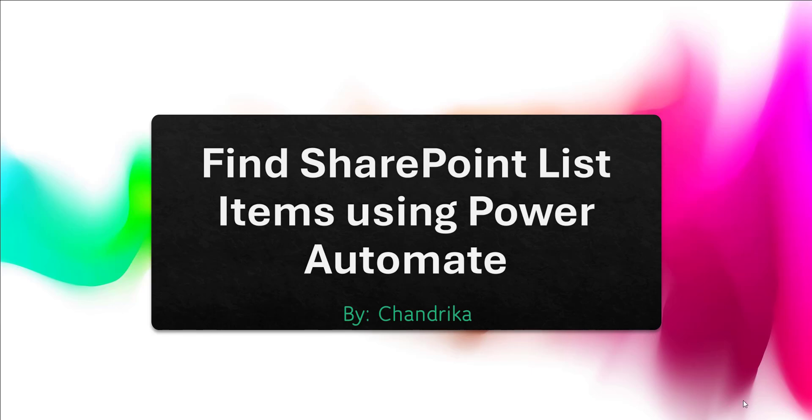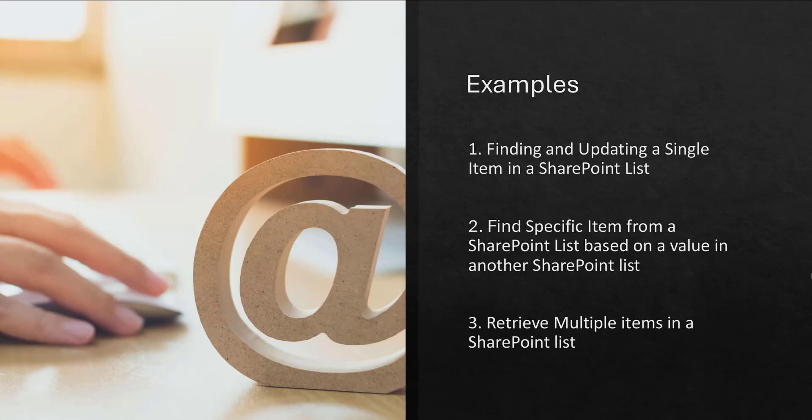In this topic, I'm going to explain the following examples. The first example is finding and updating a single item in the SharePoint list. The second example is finding a specific item from the SharePoint list based on the value of another SharePoint list. The third example will be retrieving multiple items from your SharePoint list.